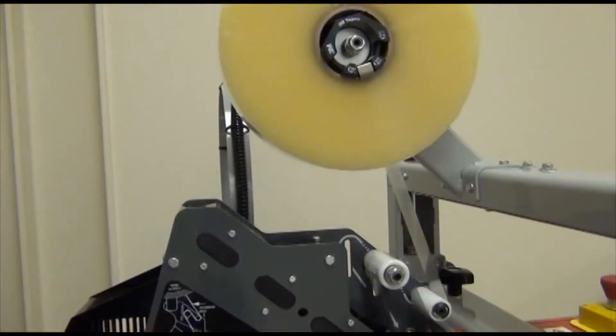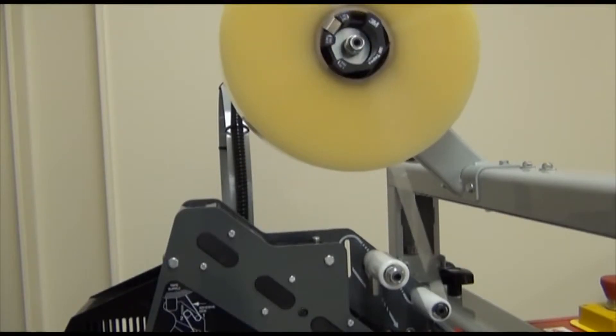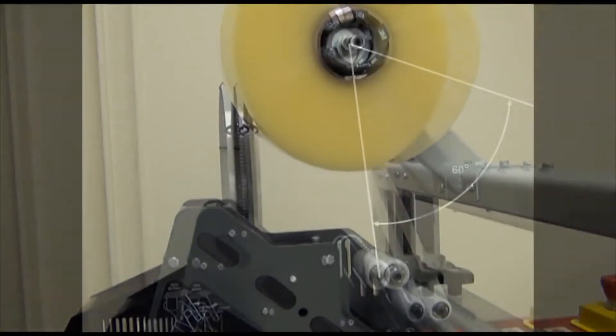The first procedure we'll demonstrate is the tape drum friction brake adjustment. The friction brake is factory set to prevent tape roll over travel. Excessive braking force causes poor tape application and tape tabbing on the trailing edge. Insufficient force causes tape cutoff problems.